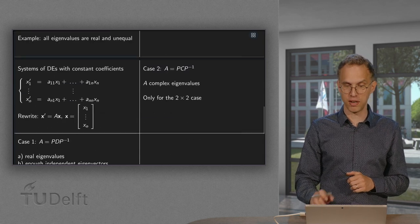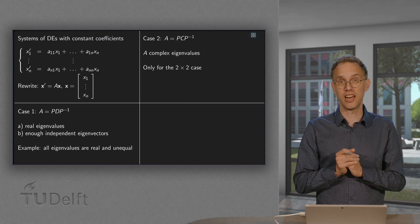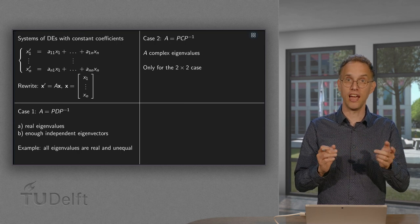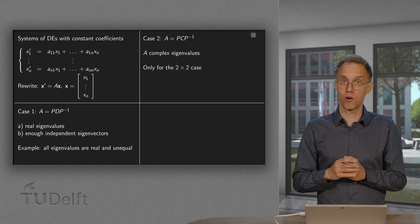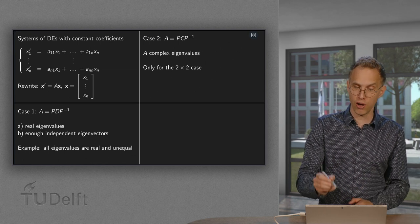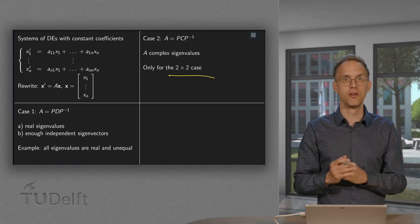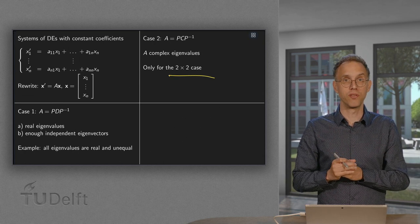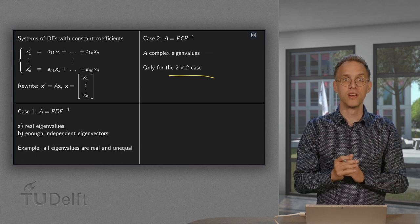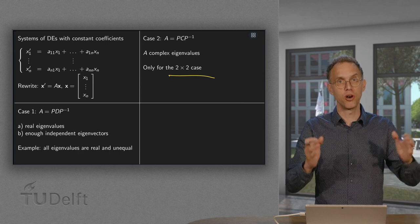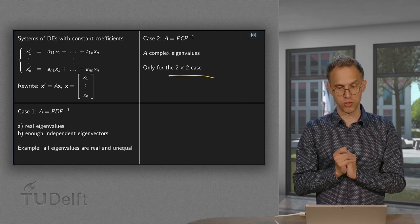The second big case, second case is if A is similar to a C, a scaling rotation matrix. So A equals P, C, P inverse. This case A has complex eigenvalues, and we will only do this for the 2x2 case. Of course you can have bigger matrices which are having complex eigenvalues, but that goes beyond the scope of this series of web lectures, we only do the 2x2 case.